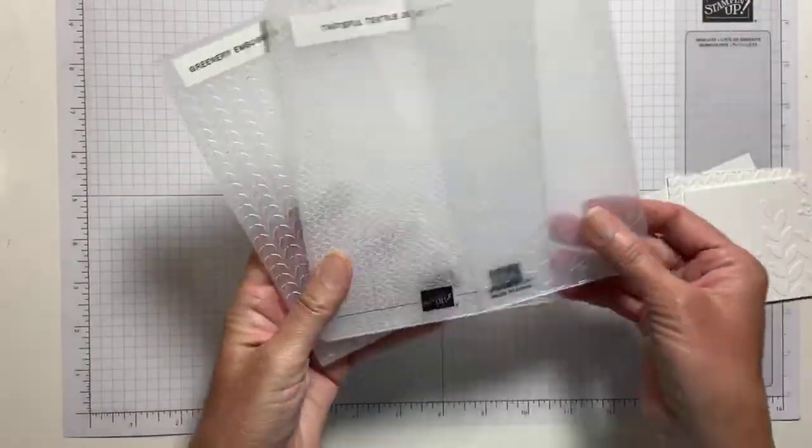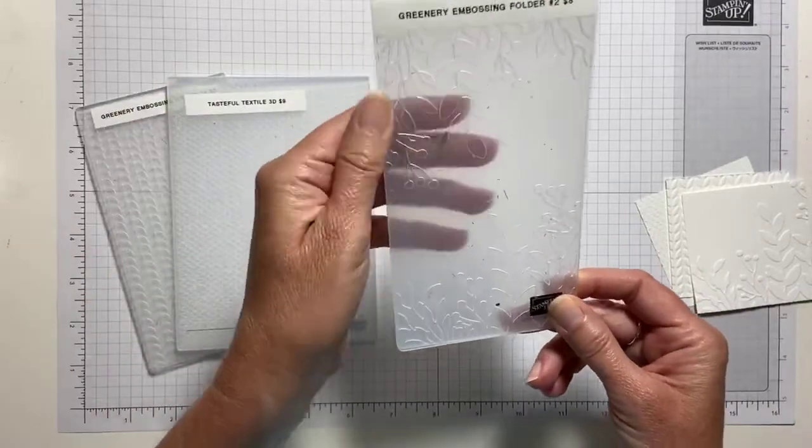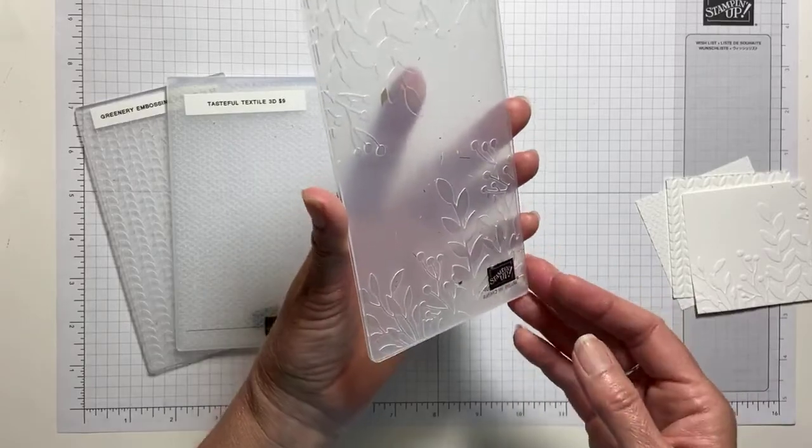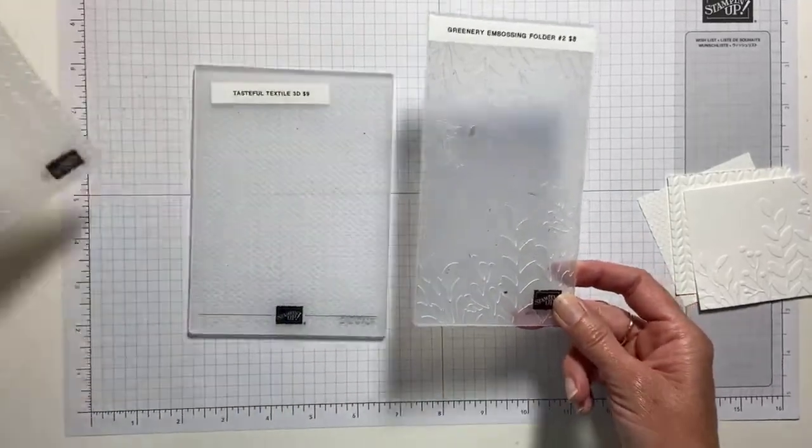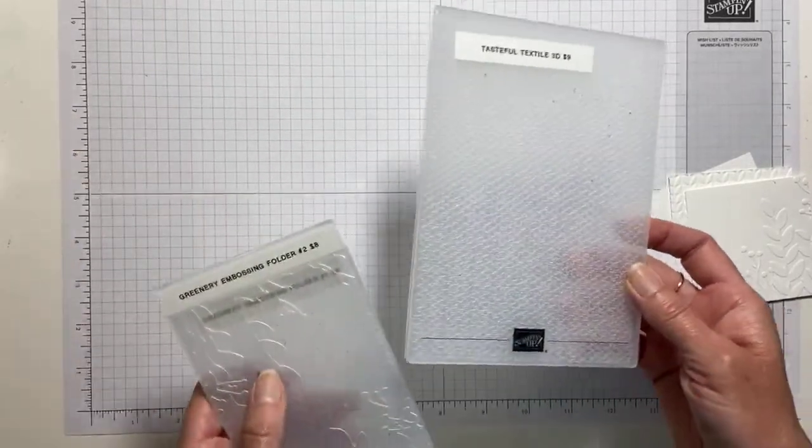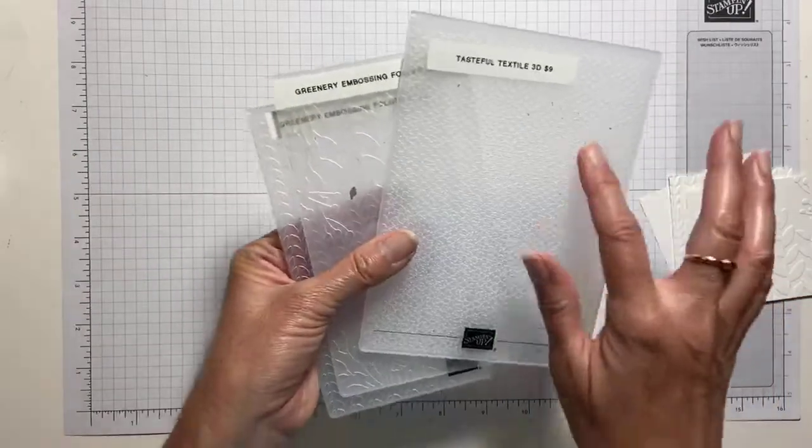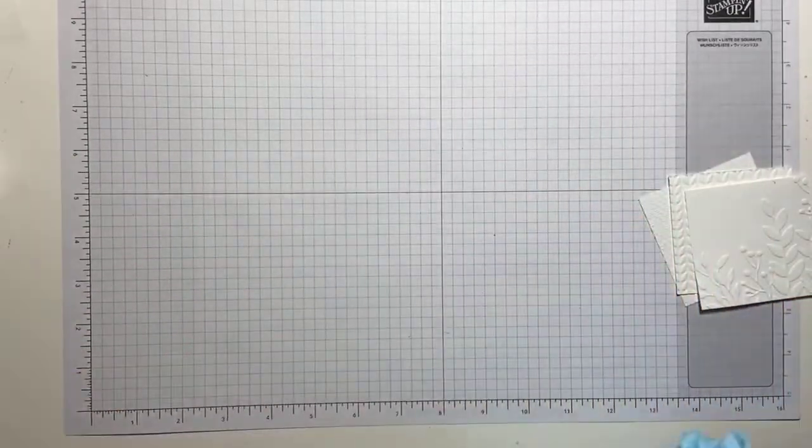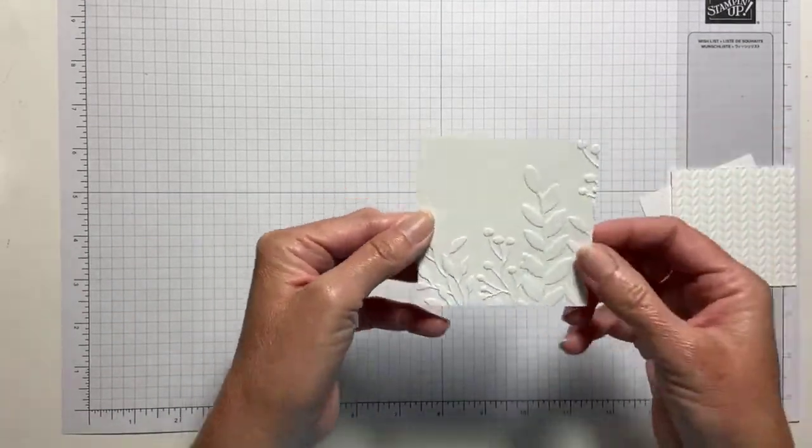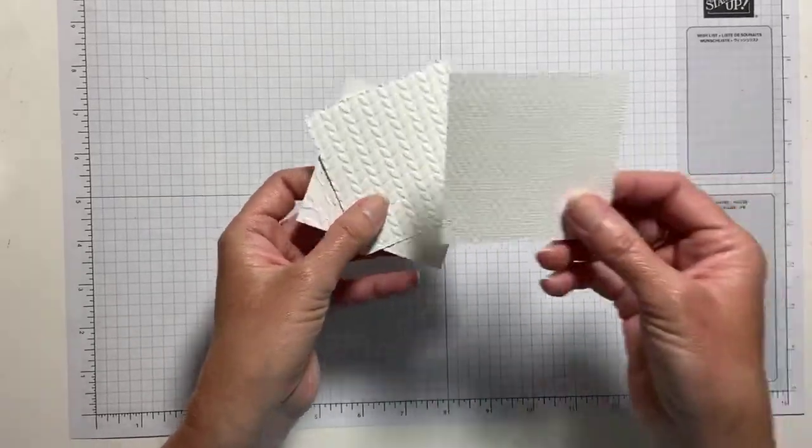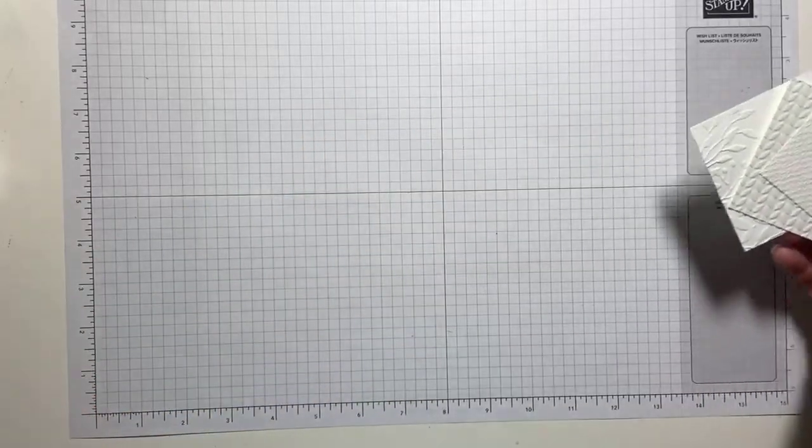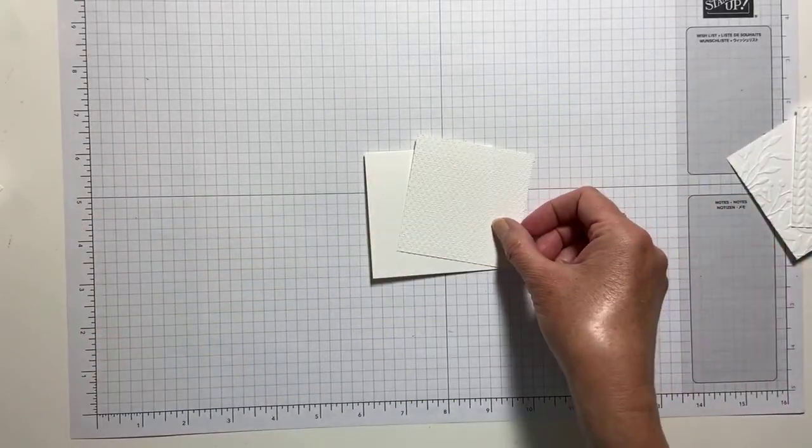And I'm using three embossing folders today. The greenery embossing folder that comes in the Forever Greenery Suite, and here's the second one. So I'm using both of those. And then Tasteful Textiles, which comes in the In Good Taste Suite. So the first thing we're going to do is we're just going to put these on our cards.